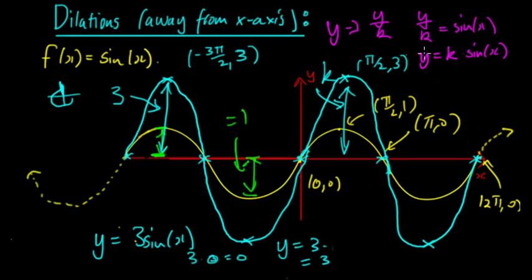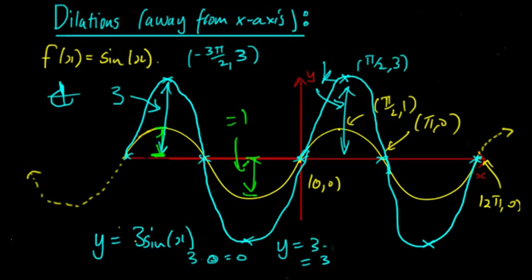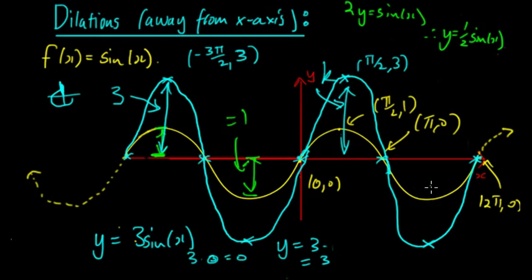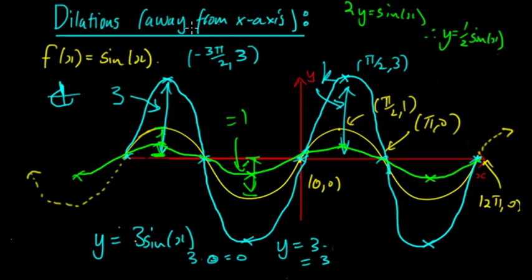What if k is a fraction? If k is equal to a half, then when we substitute, y/(1/2) gives us 2y. That means 2y = sin(x), so y = (1/2)sin(x). Instead of going up to 3, we're now going to go up to a half. The x-intercepts will remain the same, but the graph is going to be lower. So when you see dilations away from the x-axis, the x-intercepts remain the same but the magnitude will change. The graph gets closer to or further from the x-axis.